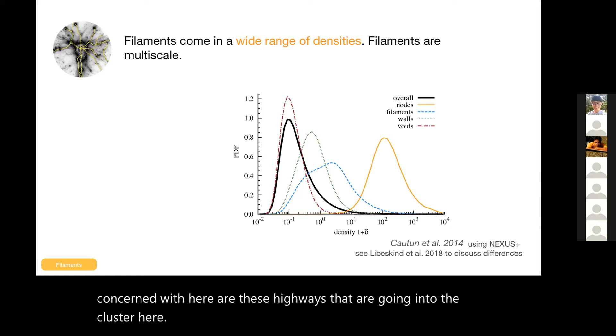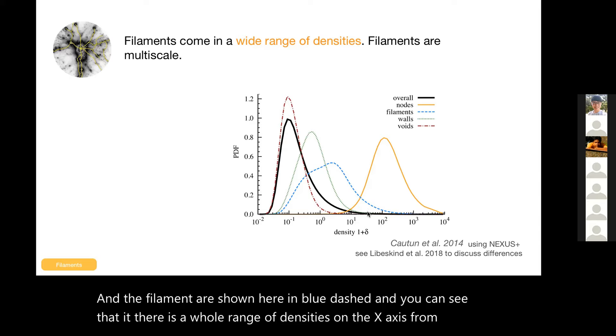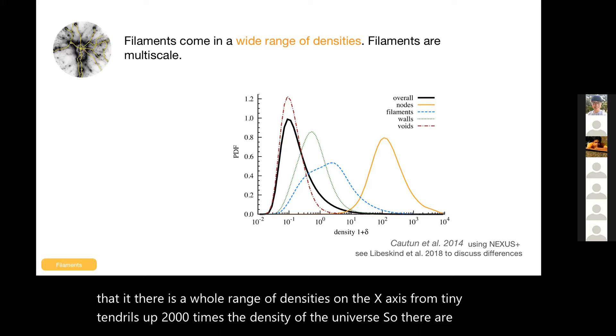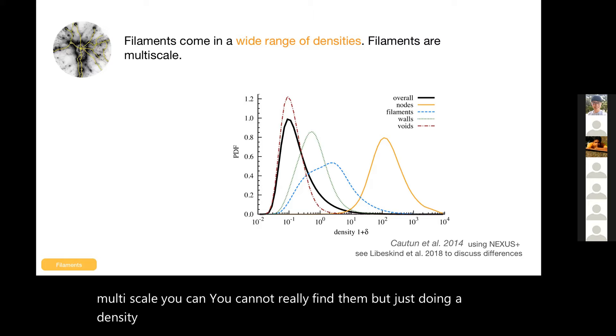Even this kind of cosmological filament comes in a wide range of densities. This aspect is really nicely shown by this paper by Marius Cautun, Rien van de Weygaert and others. They showed the inventory or the census of the cosmic web using a dark matter simulation and the NEXUS filament finder. The filaments are shown here in blue dashed, and you can see there's a whole range of densities on the x-axis from tiny tendrils up to thousand times the density of the universe. So they are multi-scale. You cannot really find them just by doing a density cut like you might argue for other cosmic web structures, clusters or voids.